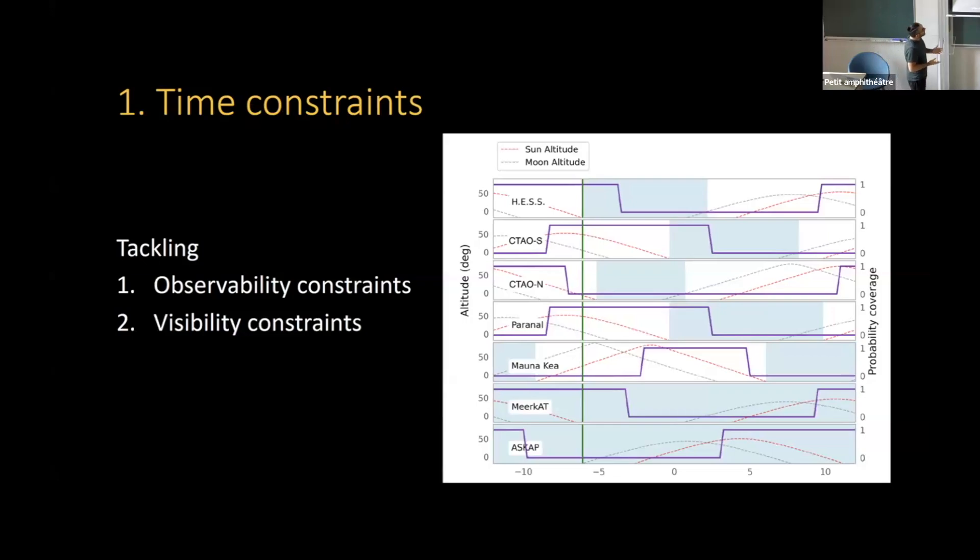Let's start with the first thing: time constraints. For that, we need to consider observability constraints and visibility constraints. When you talk about observability constraint, we say the time when the telescope can observe. It depends on the position of the moon and the sun in the sky. And the visibility constraint is about where the telescope can observe. For example, some telescopes cannot slew to less than 60 degrees angle. Some telescopes only have a small area in the sky that they can look at because they are looking up.